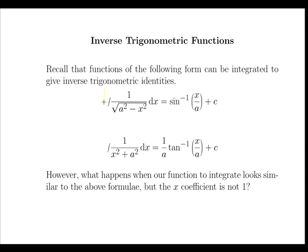Recall that a function of the form the integral of 1 over a squared minus x squared dx could be integrated to give us sine inverse x over a, while an integral of the form 1 over x squared plus a squared could be integrated to give us 1 over a tan inverse x over a. In both these formulas, a is a constant such as 1, 2, 3 and x was our variable.